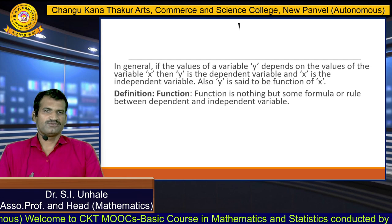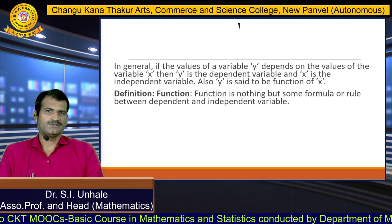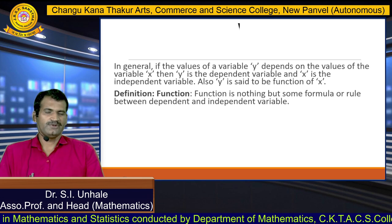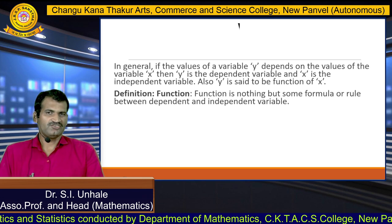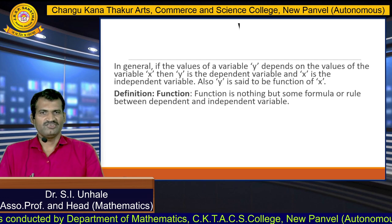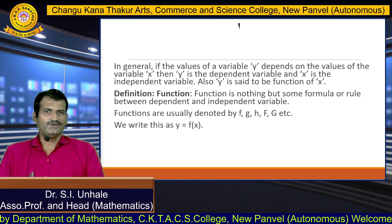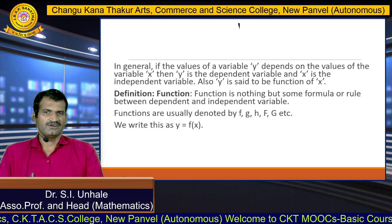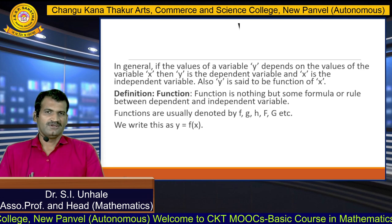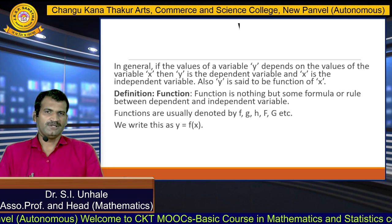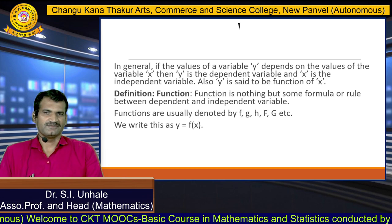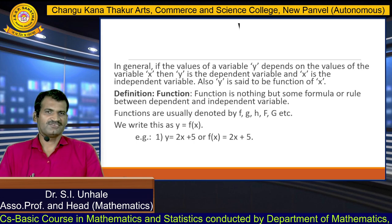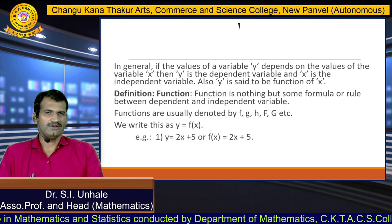Now we define what a function actually is in mathematics. A function is essentially a formula or rule relating the dependent and independent variable. The relation between the dependent and independent variable is called a function. Functions are usually denoted by the notation f, g, h, or capital F, G, etc. We write it as y = f(x), where y is the dependent variable, x is the independent variable, and f is the first letter of the word function. For example, y = 2x + 5 is a function of x, or f(x) = 2x + 5. A function can be denoted either by y or f(x).